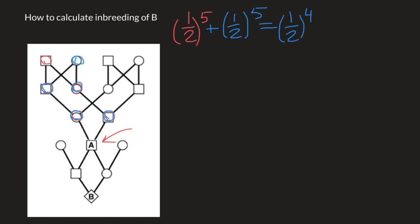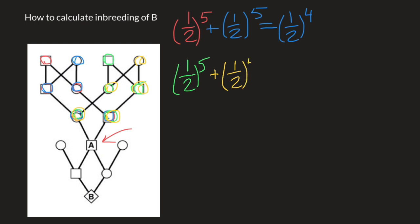But we have two more loops here. Here is going to be another loop, so we also include this in our calculation. One node, second, third, fourth, and fifth — so we get one-half to the power of five again. And yet we have another one: one, two, three, four, and five nodes again, so we have to add that as well — one-half to the power of five.